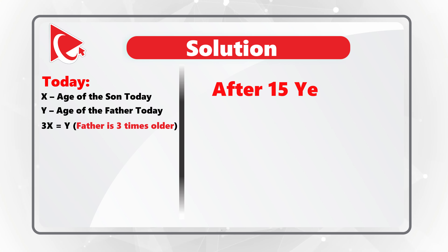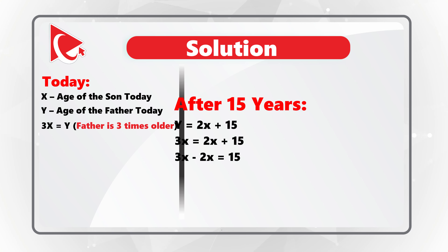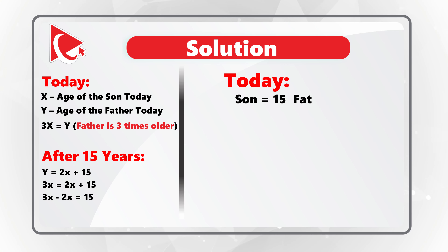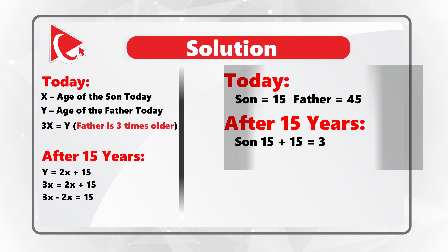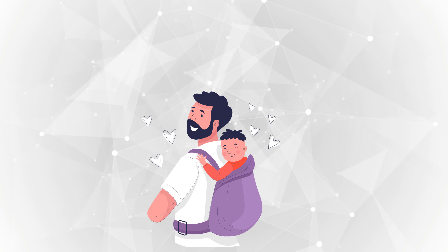We introduce two variables: x for the son's age today and y for the father's age today. Our first formula is 3x = y, since the father is three times older. After 15 years, the expression becomes y = 2(x + 15). Since y is the same in both cases, we build 3x = 2x + 15, which simplifies to x = 15 and y = 45. The father's present age is 45, and after 15 years the son will be 30 and the father will be 60.